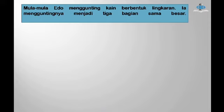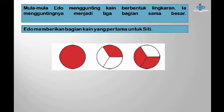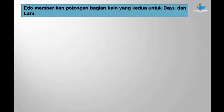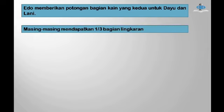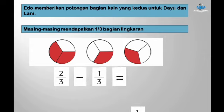Mula-mula Edo menggunting kain berbentuk lingkaran, mengguntingnya menjadi tiga bagian sama besar. Edo memberikan bagian kain yang pertama untuk Siti. Berikut gambar ilustrasinya: satu lingkaran penuh atau 3/3 dikurangi 1/3, hasilnya menjadi 2/3. Edo memberikan potongan bagian kain yang kedua untuk Dayu dan Lani, masing-masing mendapatkan 1/3 bagian lingkaran. Setelah tersisa 2/3, dikurangkan 1/3, hasilnya menjadi 1/3.